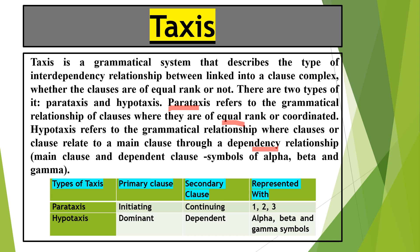How do we represent them? For types of taxis — parataxis has a primary clause initiating and secondary clause continuing. For hypotaxis, your primary clause is dominant and secondary clause is dependent. The secondary clause can be at the start. We represent parataxis through numbers 1, 2, and 3. For hypotaxis, we use the symbols alpha, beta, and gamma.